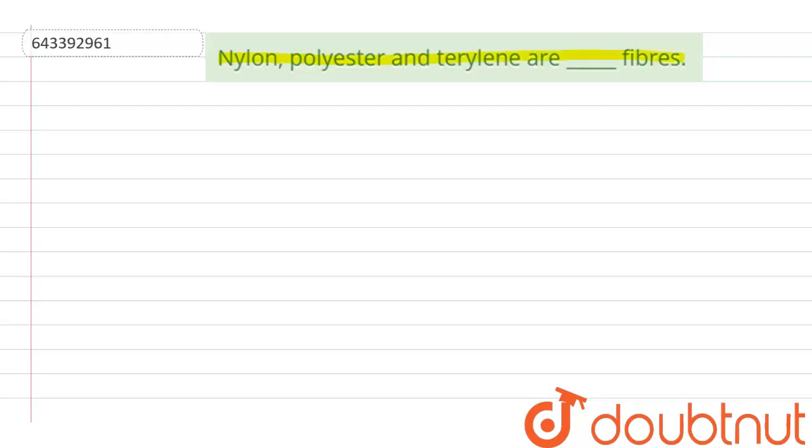We have to tell which category these three fibers belong to. If we talk about fibers, there are two types. First is natural, like you can get it from natural resources from plants and animals.